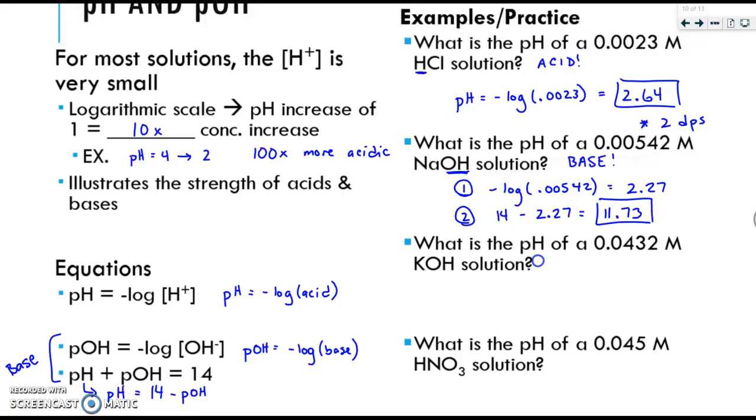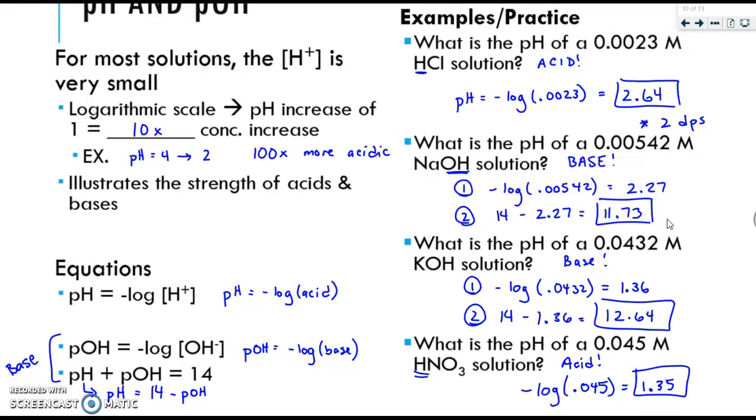At this time, please pause the video and try the remaining practice problems. Please check your answers. For the first practice problem here, it was a base because of the OH. So you knew you took the negative log of the number, and then subtracted from 14. For the next example, it was an acid. So you take the negative log of the number, and that's it. Generally, bases will have pHs greater than 7, and acids will have pHs less than 7. So if you're not getting that as an answer, always double check to make sure you weren't supposed to do two steps.